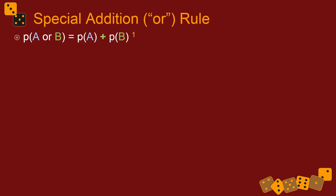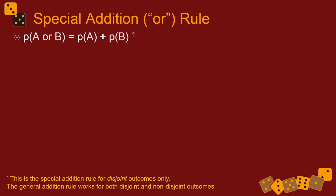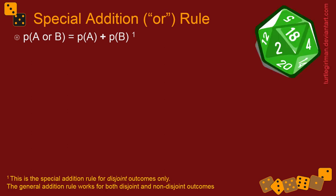The special addition rule: if you want to know the probability of one thing or another thing happening, as long as those two things are disjoint events, the probability of either happening is calculated as the probability of one plus the probability of the other. This only works for disjoint events because that's the only way everything adds up to one.